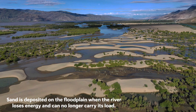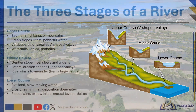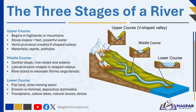A river typically flows through three main stages: the upper course, middle course, and lower course. In the upper course, the river begins in highland or mountainous areas where the slopes are very steep. The water flows rapidly and with great force, leading to vertical erosion that cuts deeply into the landscape. This creates V-shaped valleys, and landforms such as waterfalls, rapids, and potholes are common.